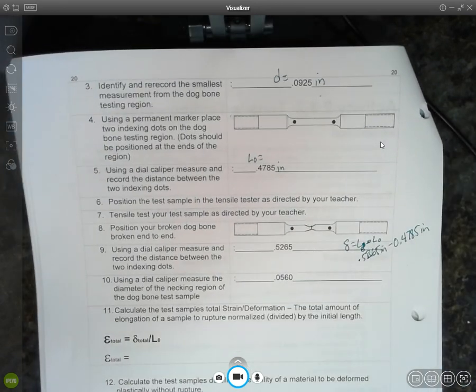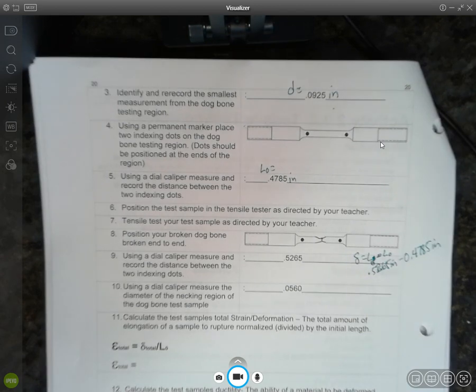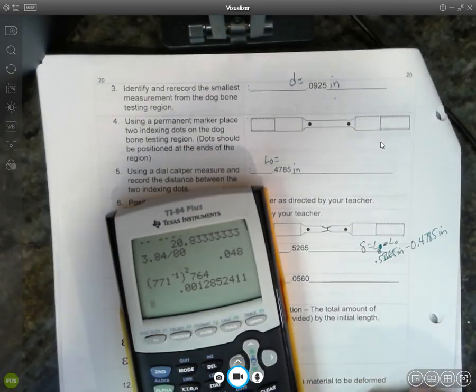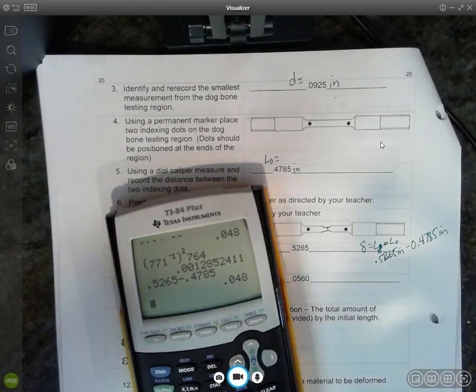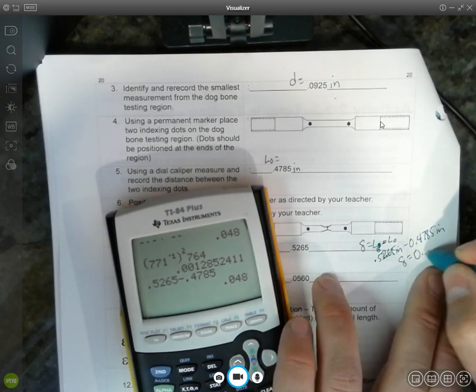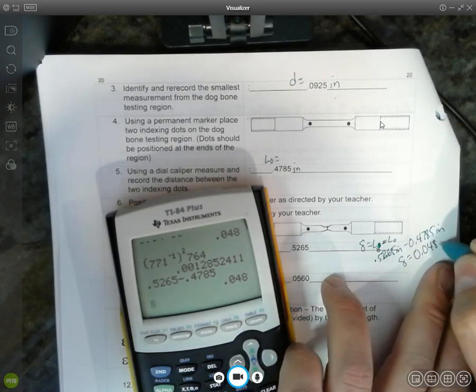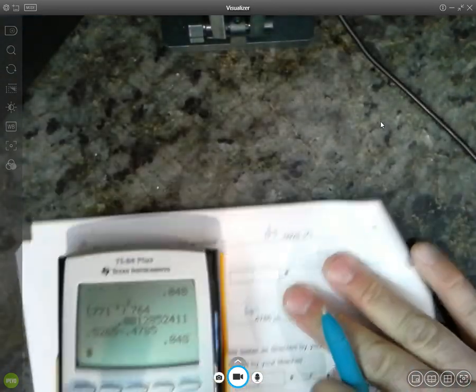So 0.5265 inches minus 0.4785 inches. And since we're there, I'm going to just go ahead and hopefully grab my calculator. And there it is. I guess one of my kids was playing with it. And we'll get the original length, so 0.5265 minus 0.4785. I'm sorry, the deformation length or the amount of stretch. So the deformation is 0.048 inches. Let me just circle that there.